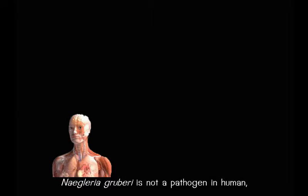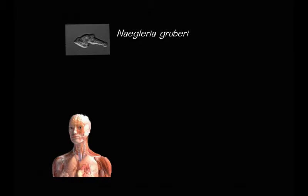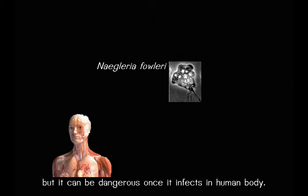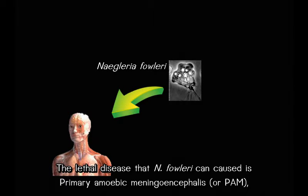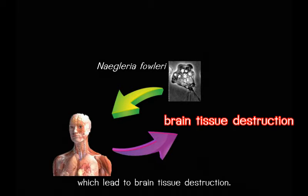Naegleria gruberi is not a pathogen in humans, but its relative Naegleria fowleri is. Naegleria fowleri is an amoeba similar to Naegleria gruberi but is a dangerous one, causing infections in human bodies. It can cause primary amoebic meningoencephalitis, which leads to brain tissue destruction.